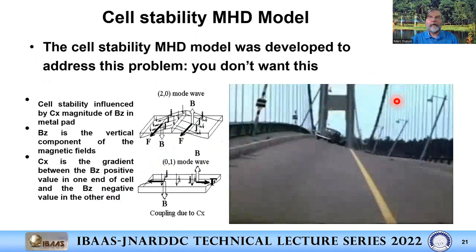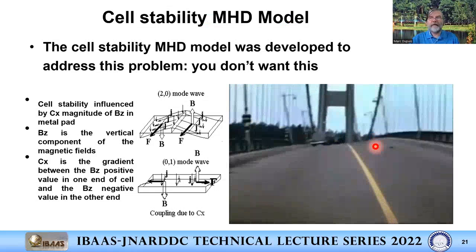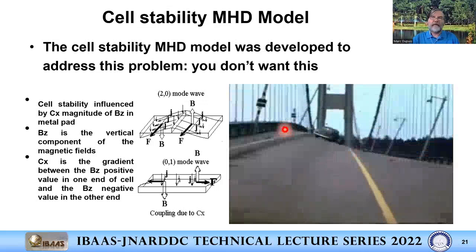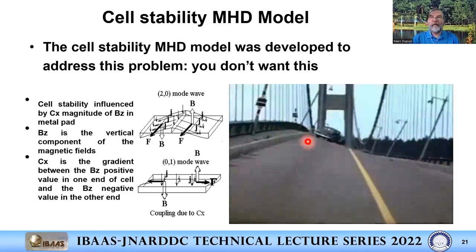The next type of model addresses the next physical challenge: cell stability. This is a visual example of what we're fighting against. Imagine this is the surface of the bath-metal interface — the surface of the metal pad — and the wave here on the Tacoma Bridge was created and amplified because the frequency of the wind matched the natural frequency of the bridge. To avoid that, you have to change the mass ratio so the natural frequency does not match the wind frequency.